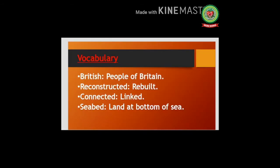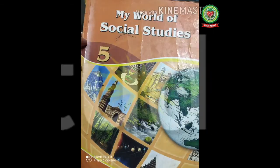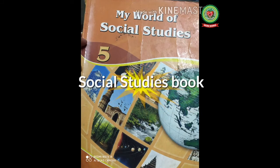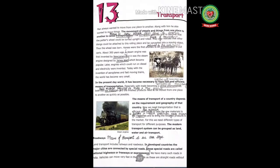Let us discuss a few difficult words you will read in the chapter today. 'British' means people of Britain. 'Reconstructed' means rebuilt. 'Connected' means linked. 'Sea bed' means land at the bottom of the sea. Now students, take out your social studies books and open them to page number 88. You have to mark all the meanings and terms side by side.